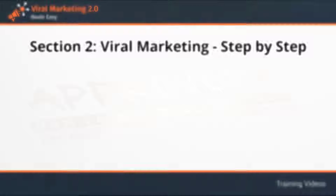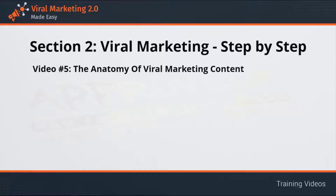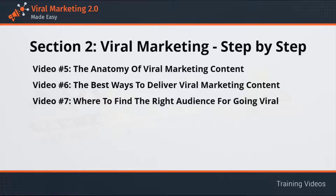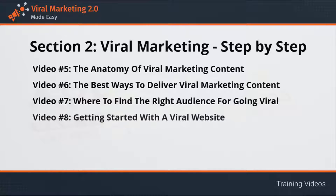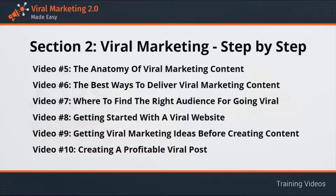Hello there once again, my good friends, and welcome to section two of our online viral marketing video training series: Viral Marketing Step by Step. Here we are going to discuss the characteristics of viral content, how to create it, how to make it go viral, and where to make it go viral. Contents in this section include: the anatomy of viral marketing content, the best ways to deliver viral marketing content, where to find the right audience for going viral, getting started with a viral website, getting viral marketing ideas before creating content, and creating a profitable viral post.